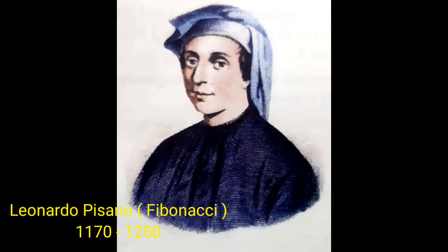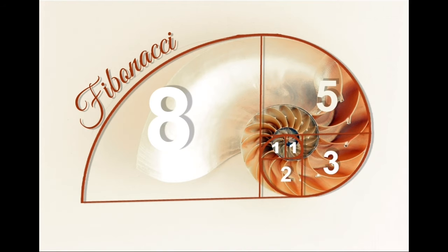The famous mathematician called Leonardo Pisano was born around 1170 in Pisa in Italy. Later, he was known as Fibonacci. Fibonacci wrote several books. In one of them, he included a number pattern that he discovered in 1202. The number pattern was named after him.